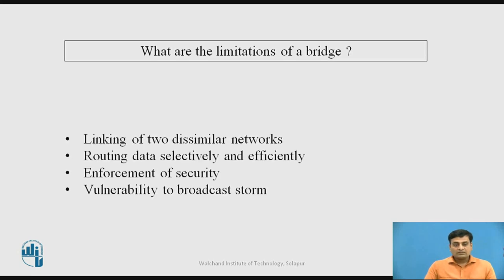These are some limitations of a bridge which are overcome by the router. For example, linking of two dissimilar networks. A router can overcome the limitation by routing data selectively and efficiently — it can both filter and route. Enforcement of security is an additional feature of a router over a bridge, and routers also resist broadcast storms.